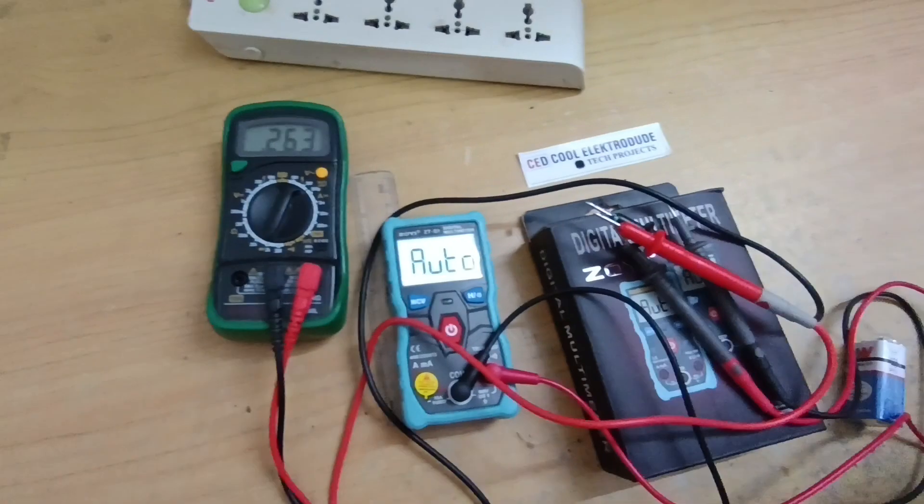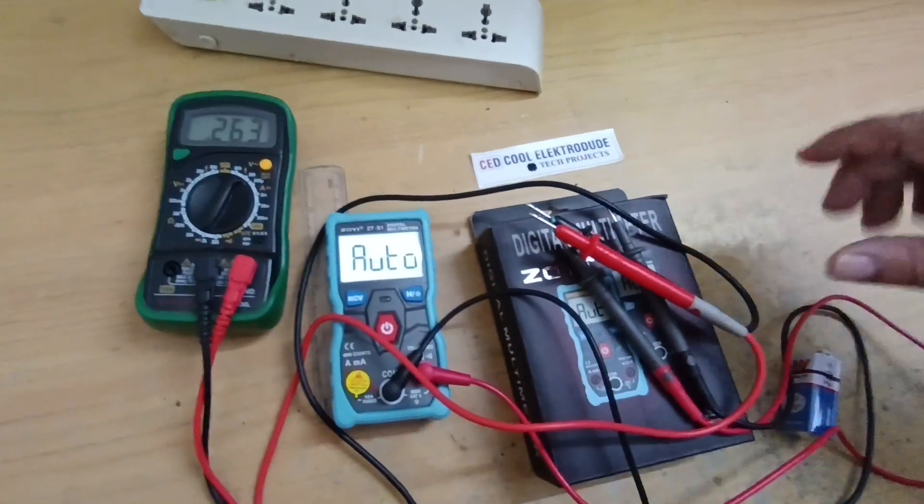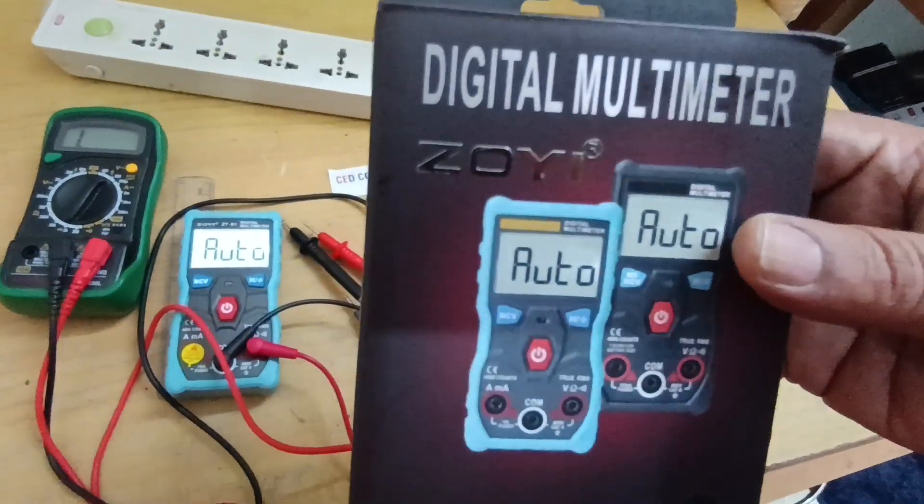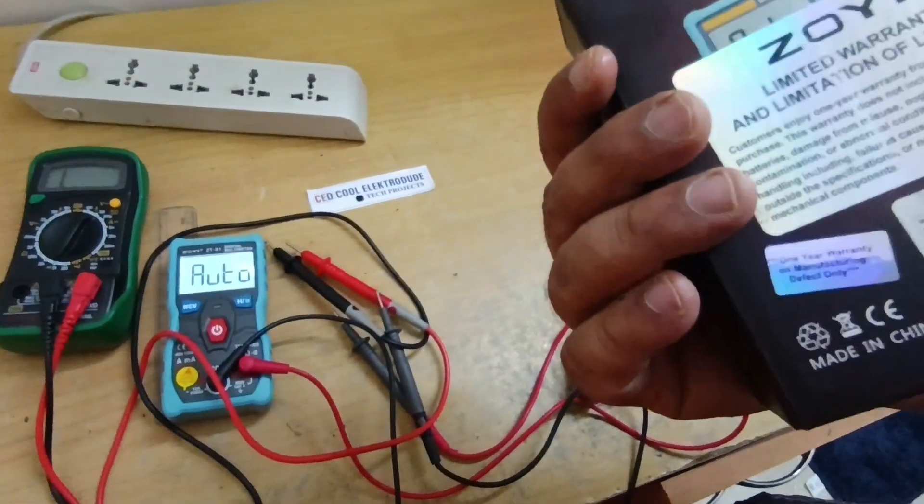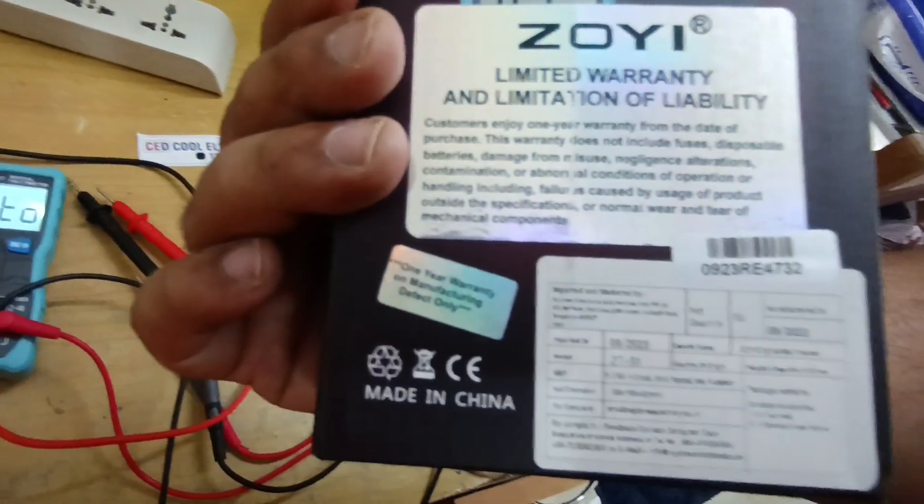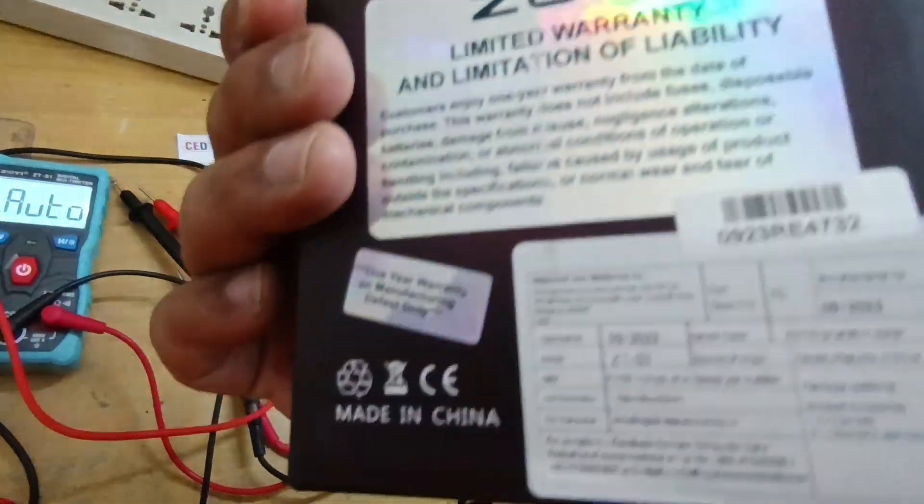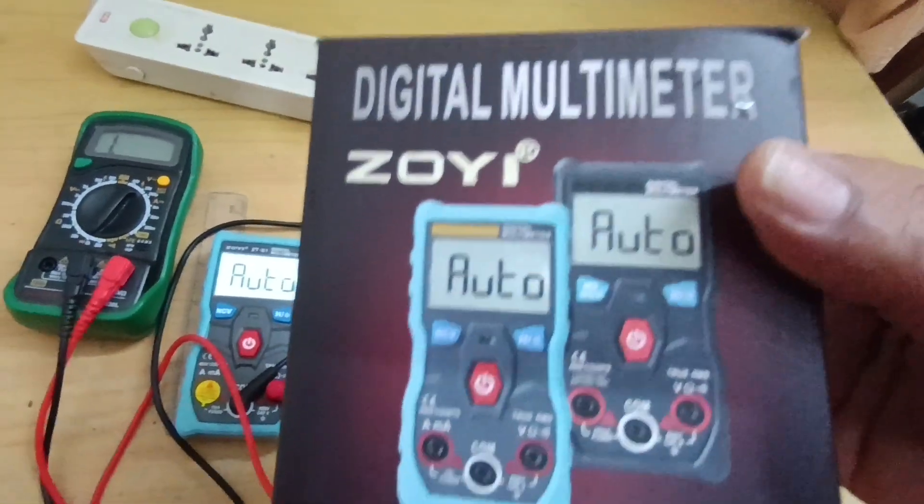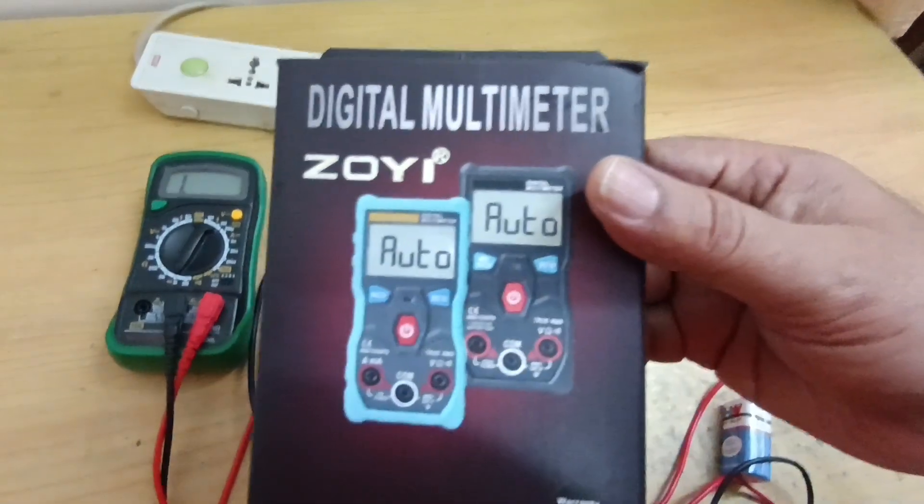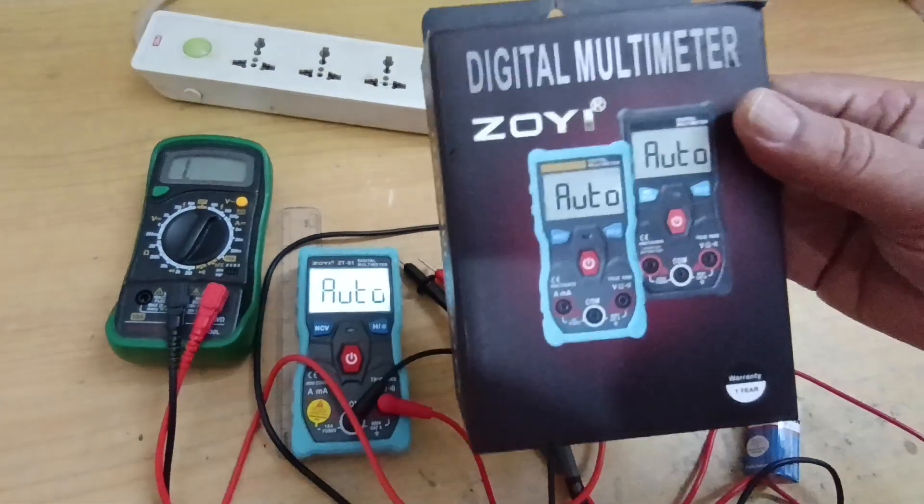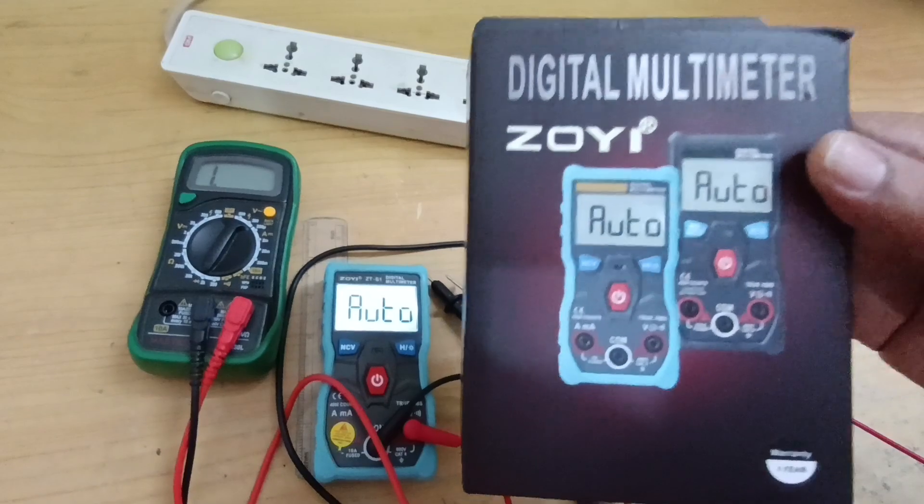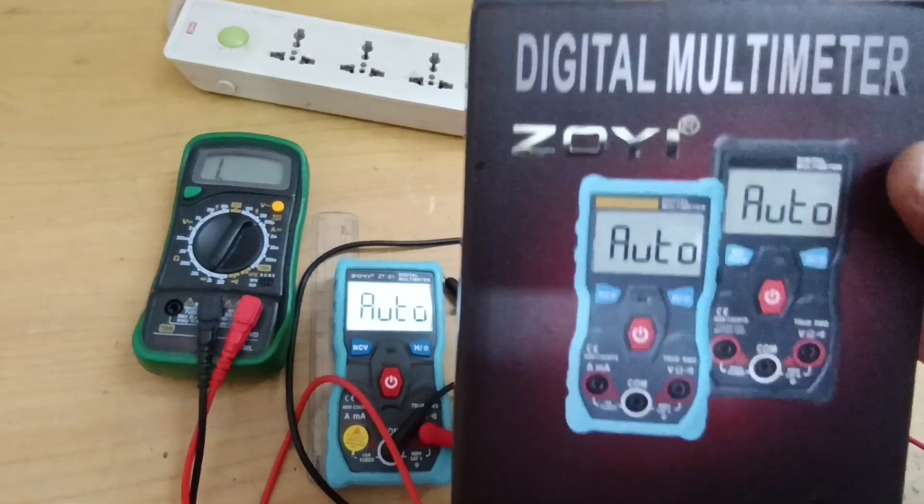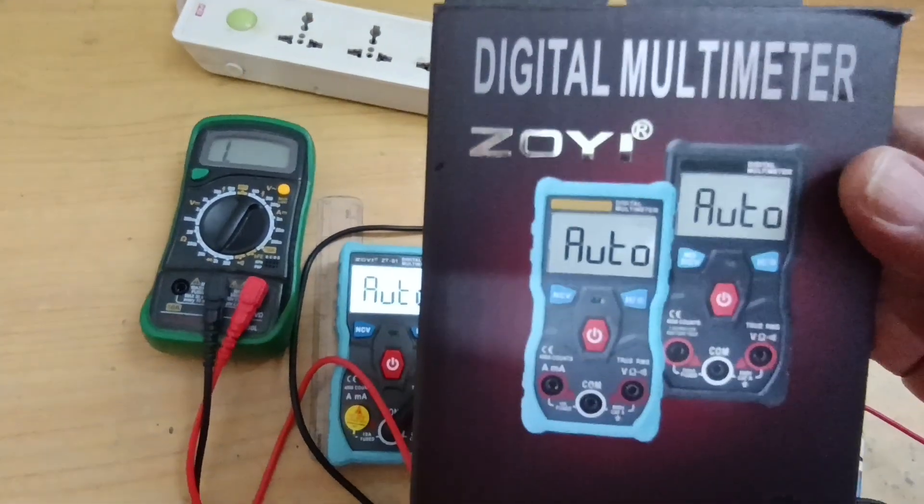This is about the multimeter functionality. This comes in two colors—Zoyi digital auto-ranging multimeter with limited warranty. It's a made-in-China product available in most multimeter shops and online. Hope you like the video. Please subscribe to the channel and you'll see more videos coming on multimeters in the next videos. Thank you very much.